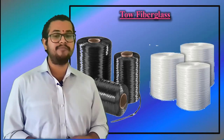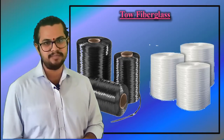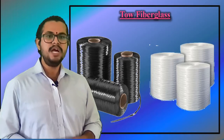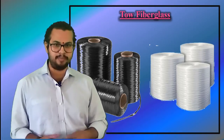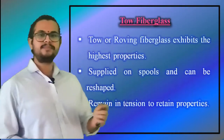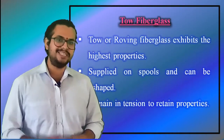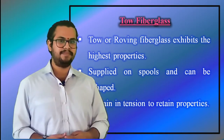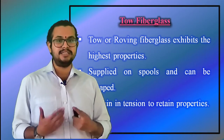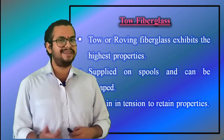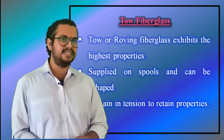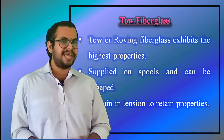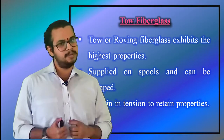Spread tow fabrics are woven sheet materials used for composite layup, where the warp and weft are flat tows rather than spun yarns, in order to provide the maximum strength as a composite. When fiberglass is in the form of tow or roving, it exhibits the highest number of properties that are achievable. Fiberglass in this form is supplied on spools that can be unrolled, cut as needed, or fed into filament winders.